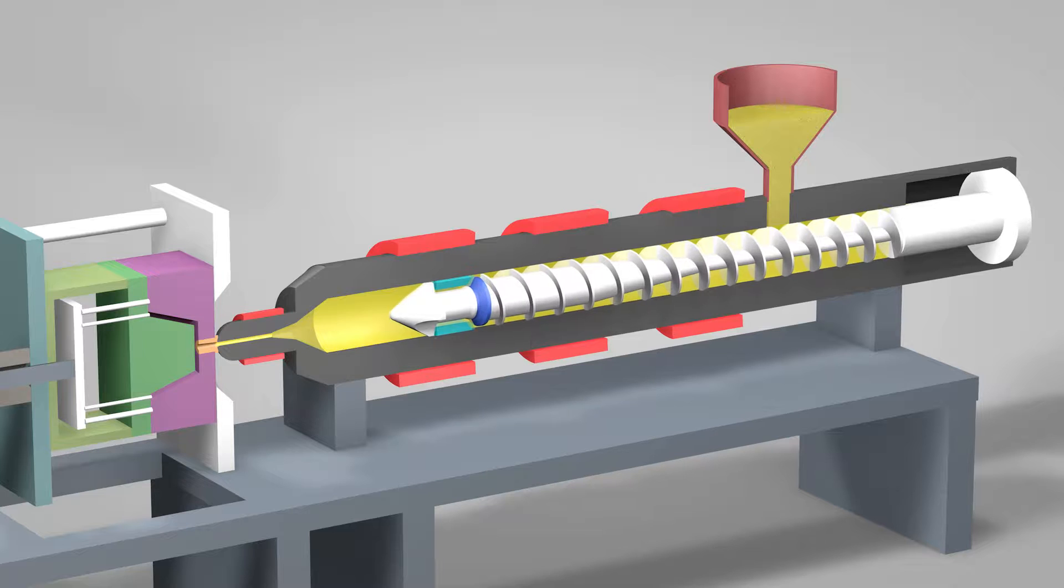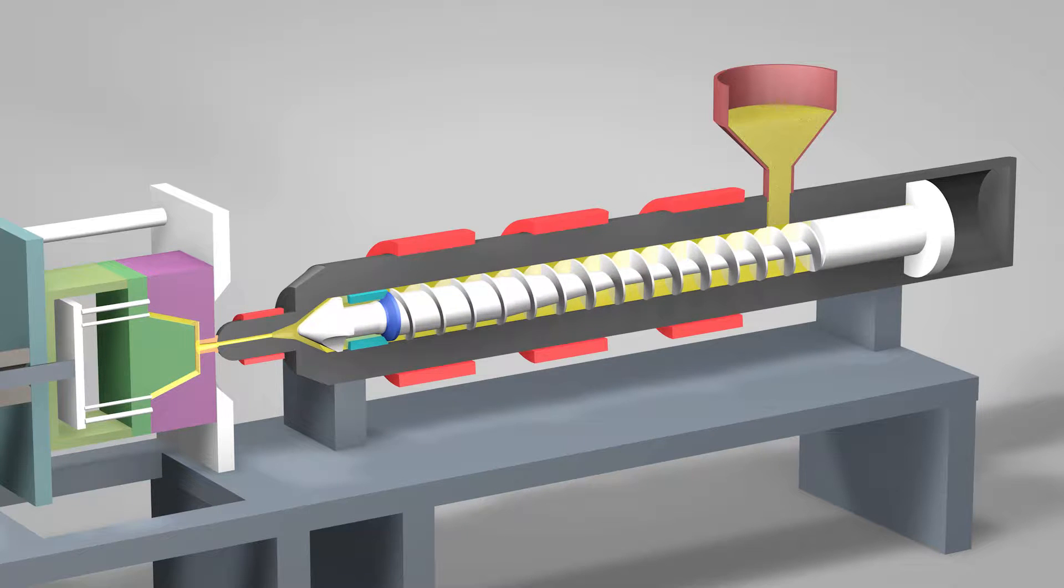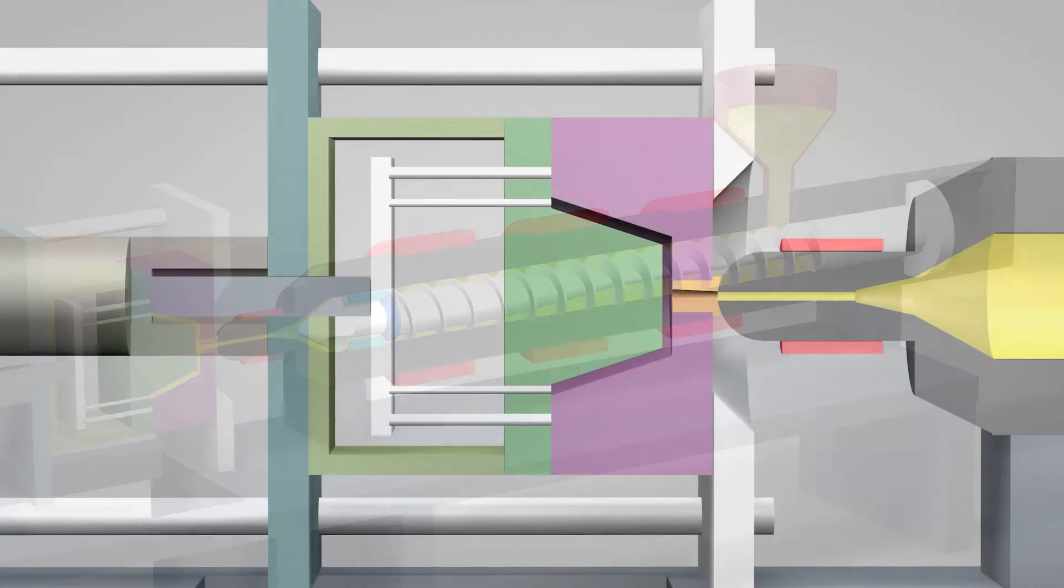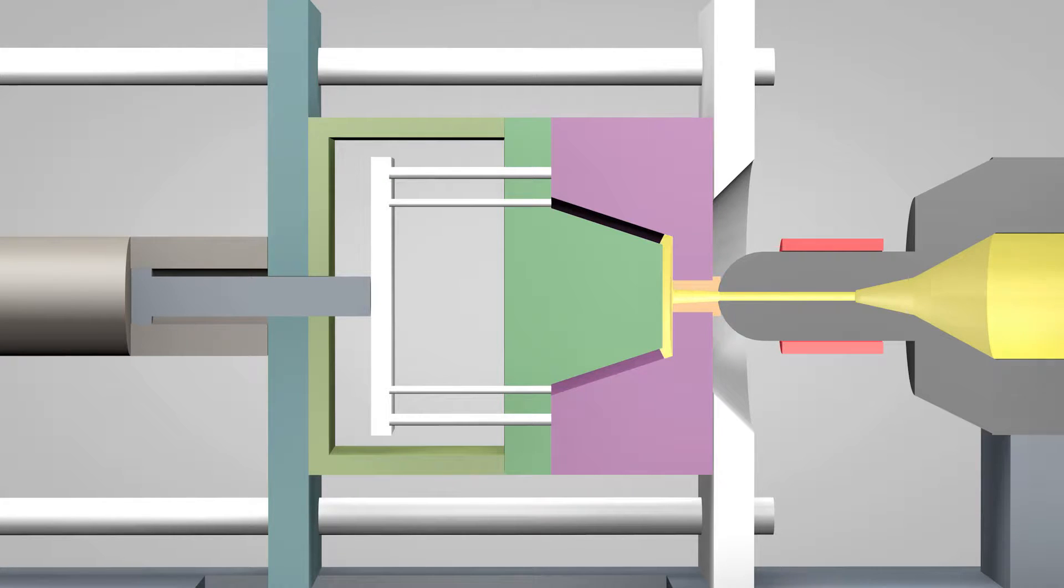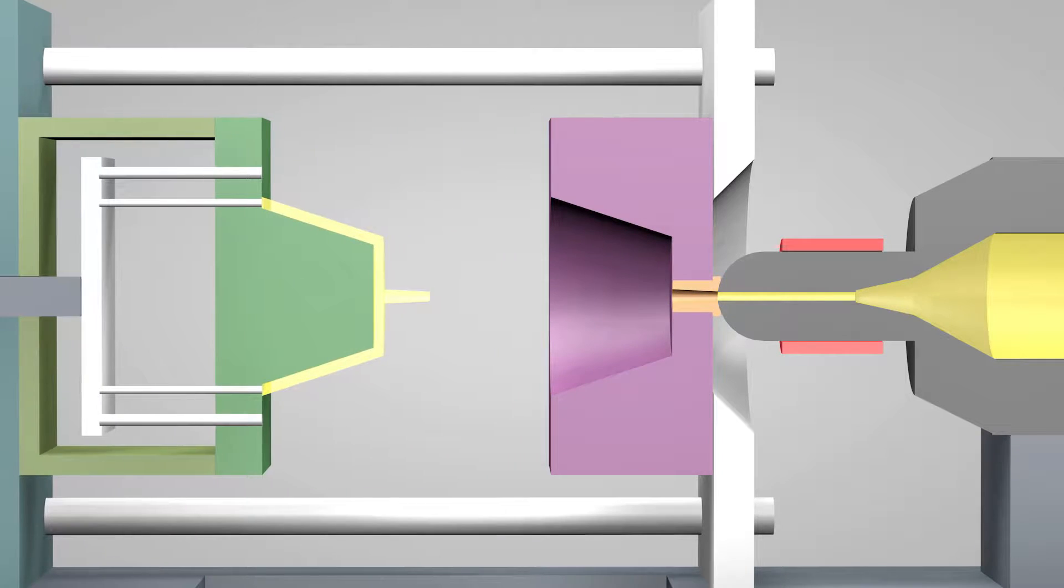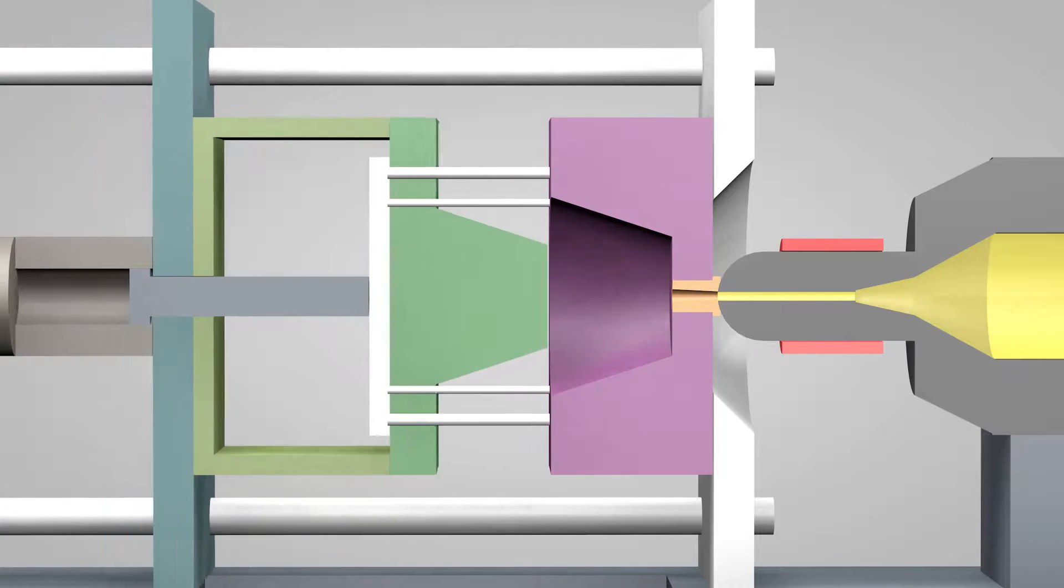Once enough molten plastic is in front of the screw, it ramps forward like the plunger of a syringe. In a matter of seconds, the screw injects the molten plastic into the empty part of the mold called the cavity image. The plastic solidifies in under a minute. The mold opens and the part is ejected. The mold then closes and the process repeats.